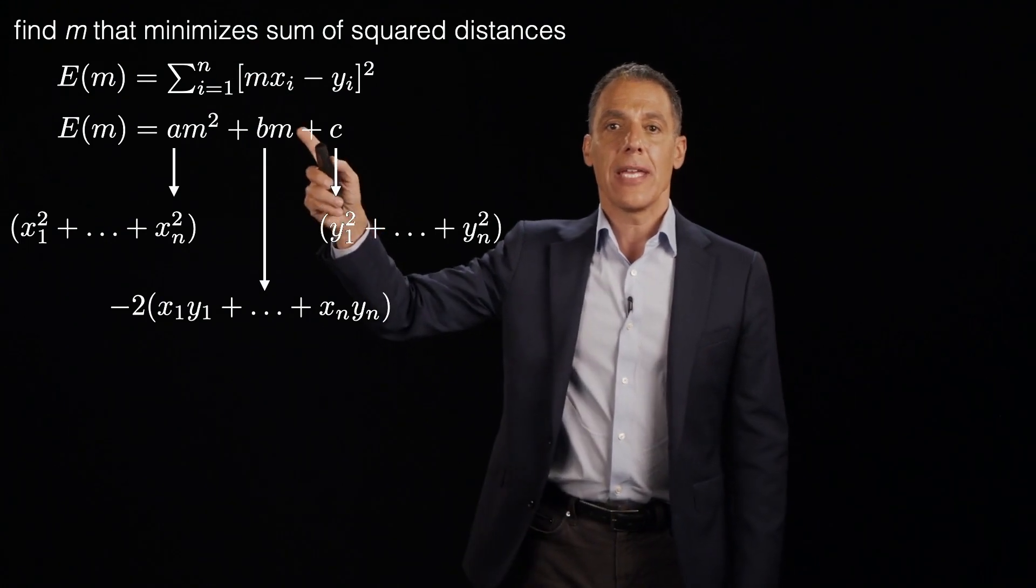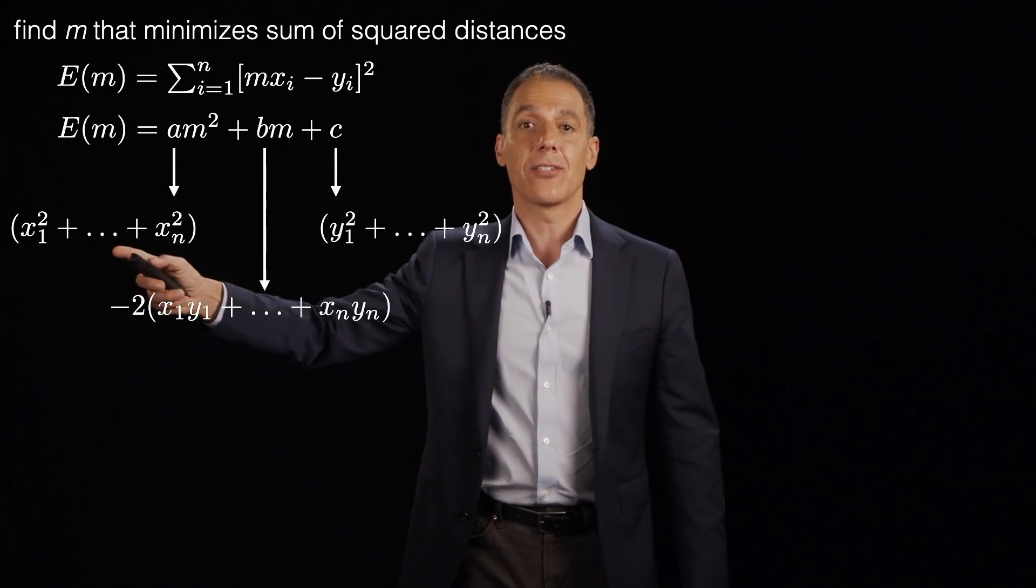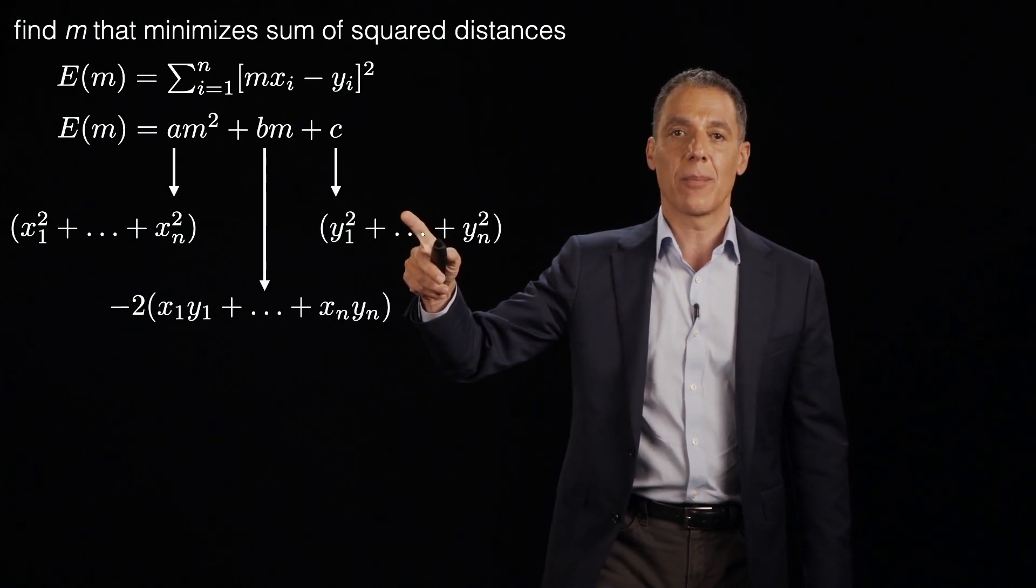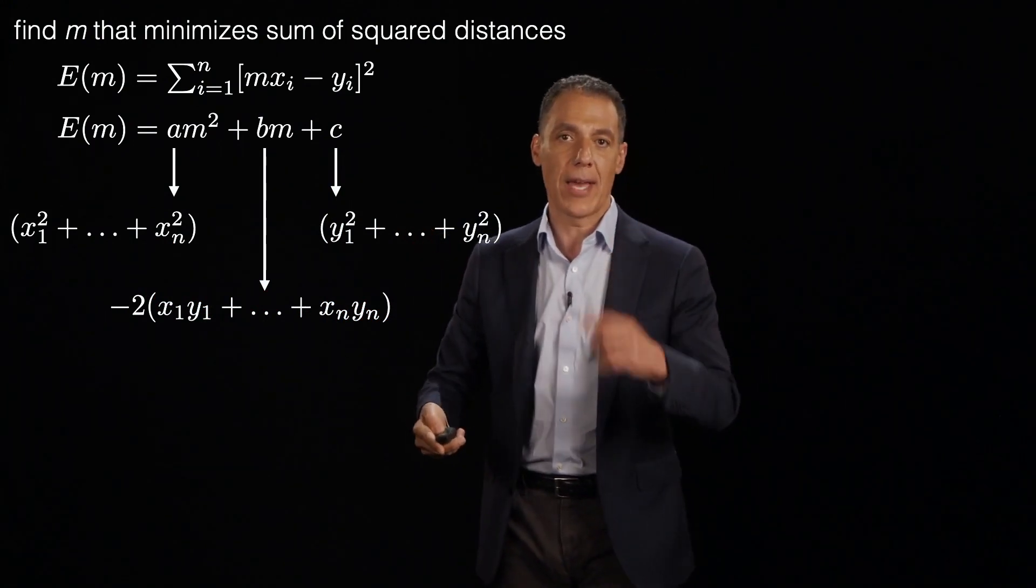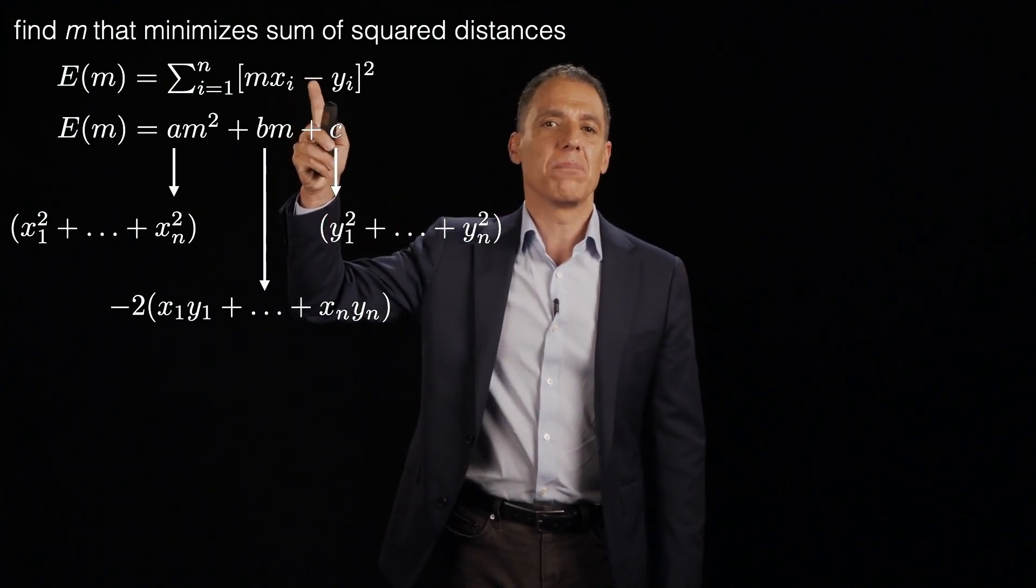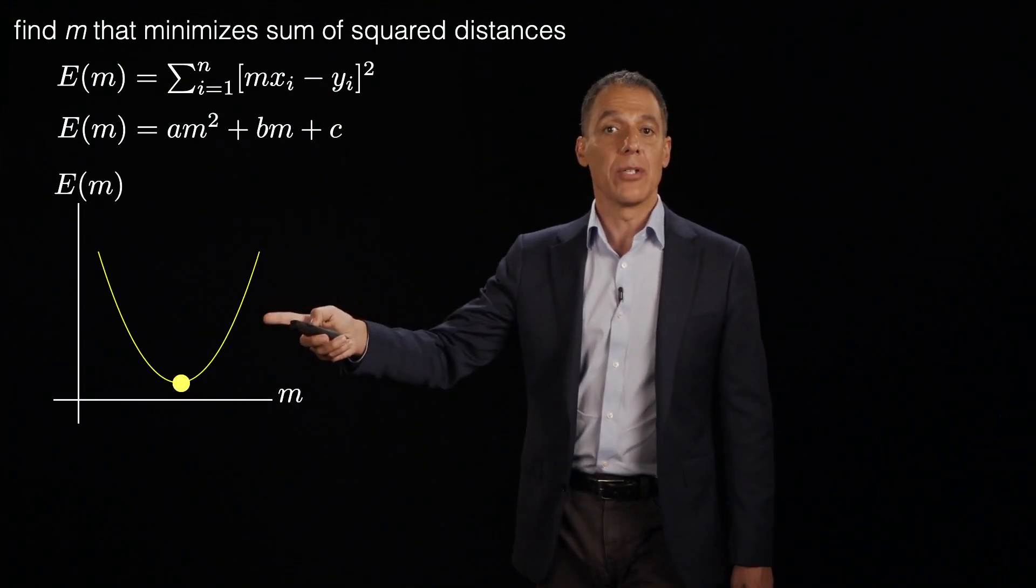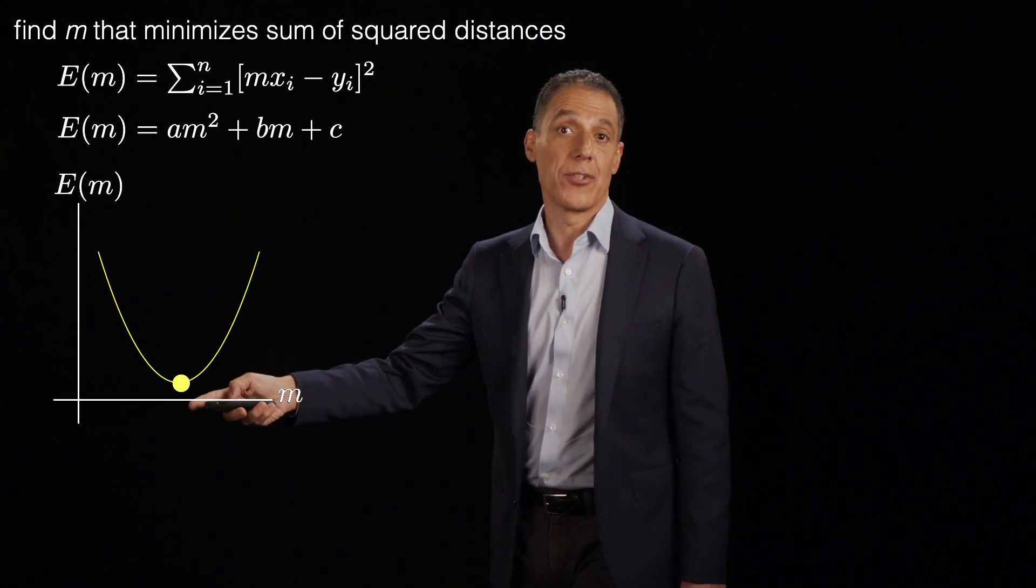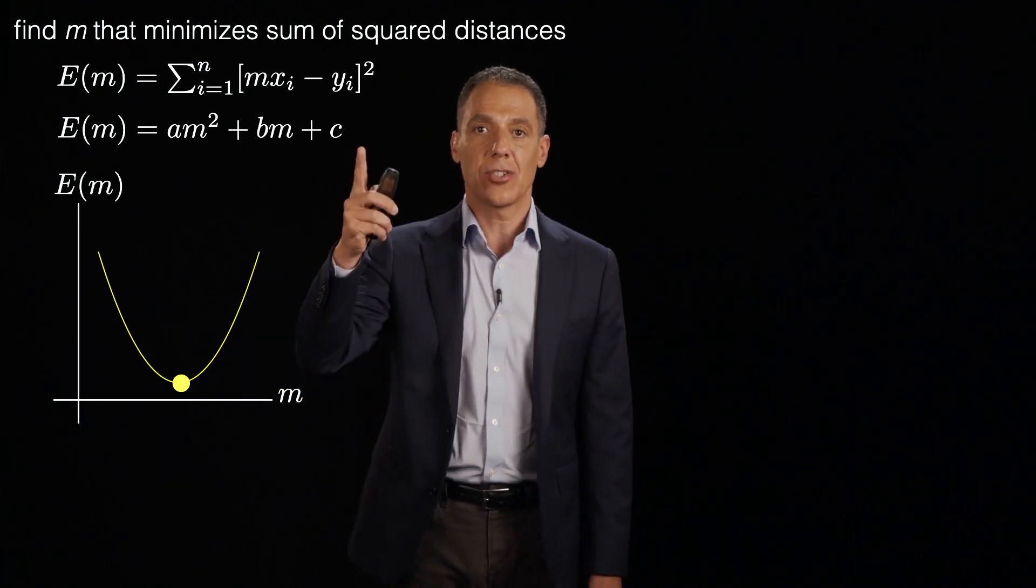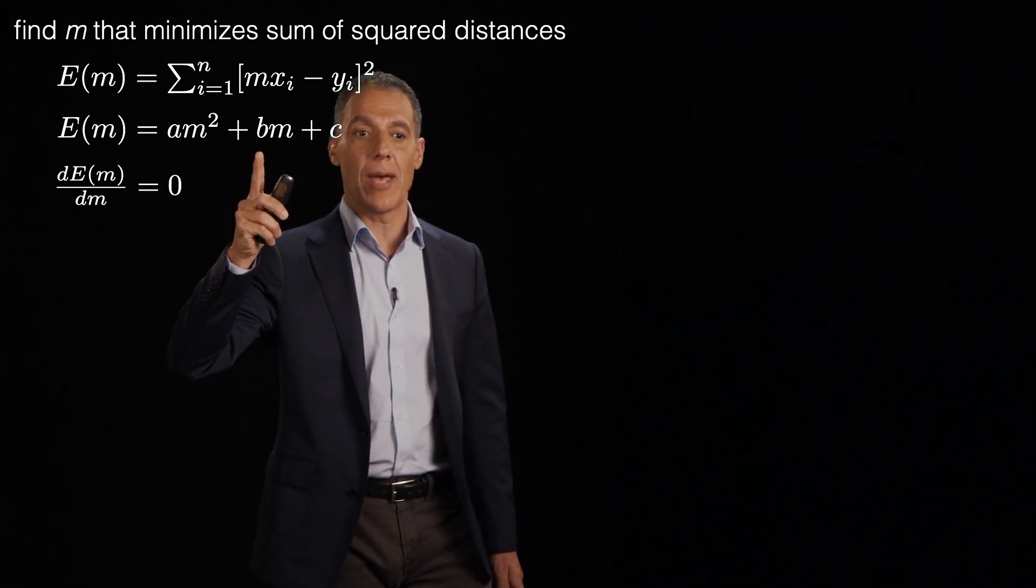So let's remind ourselves where we are. E of m is, in fact, am squared plus bm plus c, where a is the sum of the square of the x components, b is minus two times the sum of the x and the y's, and c is the sum of the square of the y components. We derived that previously. So now what I want to do is take that error function, which all I've done, by the way, is I've just broken this out of the summation to make it a little bit easier to see. And what do I want to do? We know it's a parabola. We know that the minimum is going to be where the derivative is zero, because that's where the tangent is zero. So let's compute the derivative of E of m. This can't be that hard. It's just a parabola. All right.